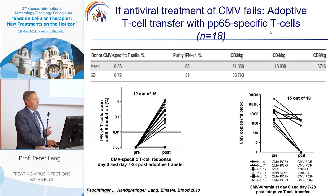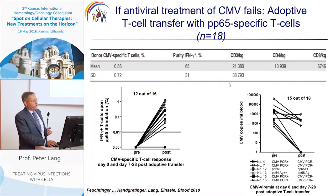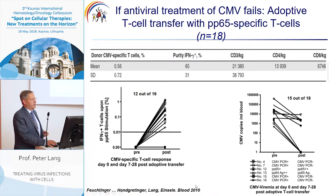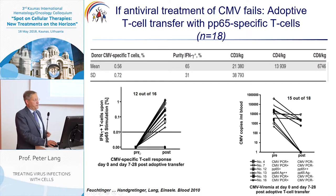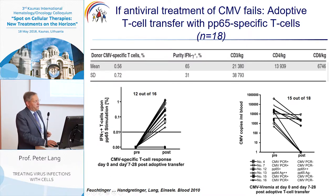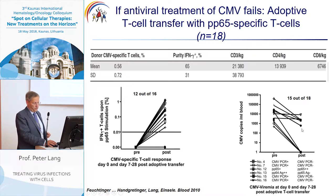In patients who failed antiviral treatment, we infused a bit more T cells — about 20,000 per kg body weight. Again, all patients had no specific T cells detectable prior to transfer. After transfer, we could see proliferation in 12 out of 16 patients, and a total of 15 out of 18 available patients could reduce or completely eradicate their CMV load and CMV infection.